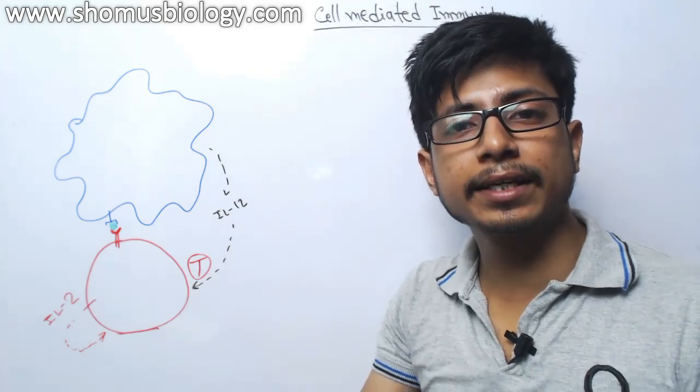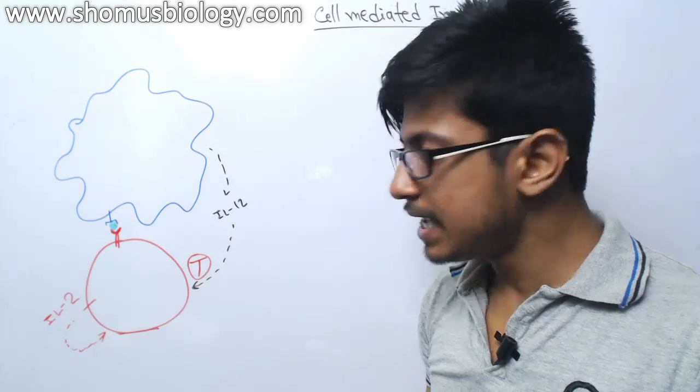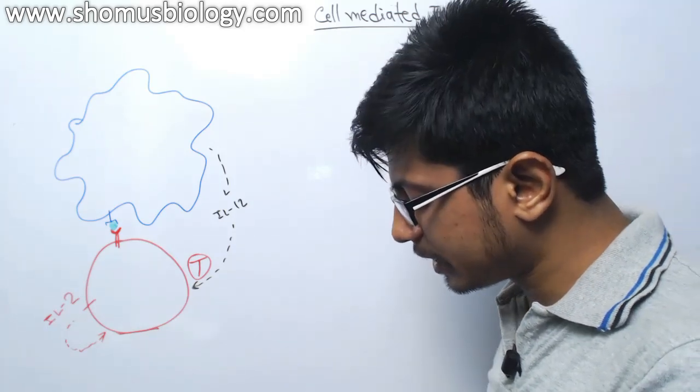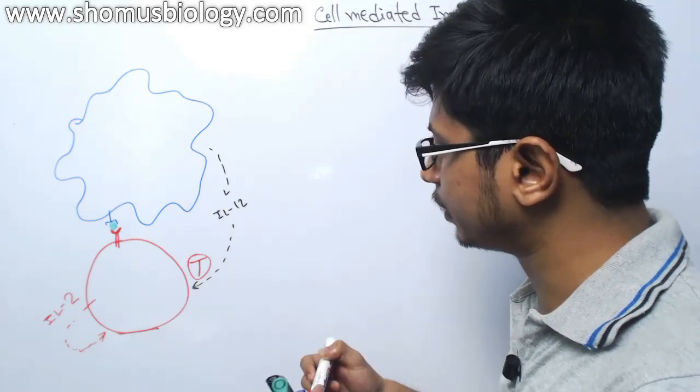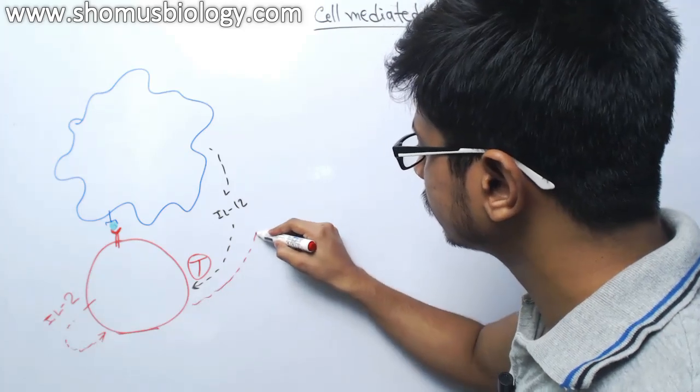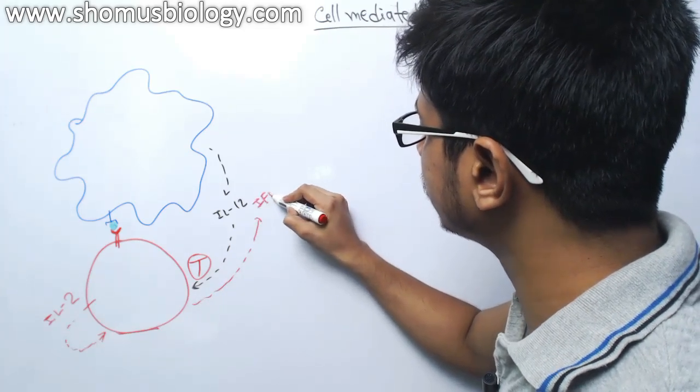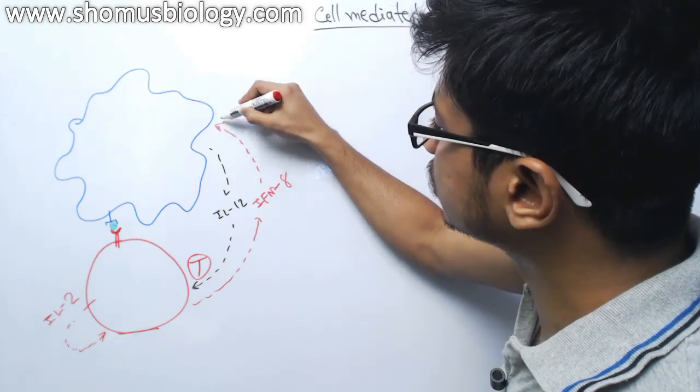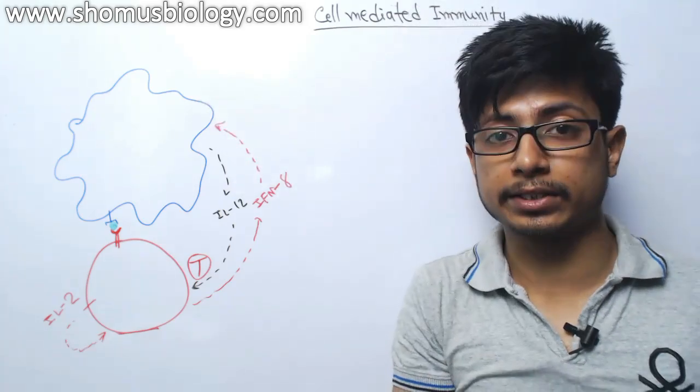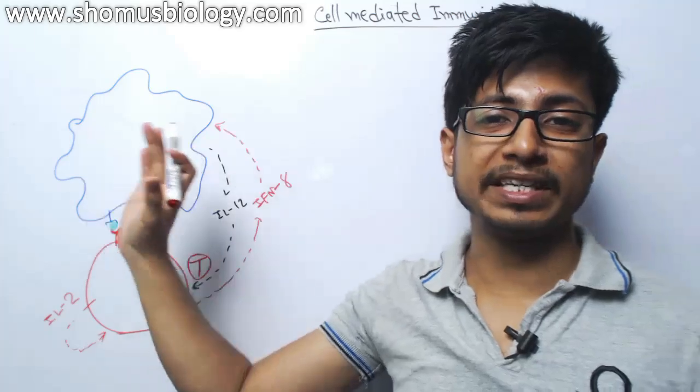So it is an autocrine signaling that we can see, and it also starts secreting another chemical molecule that is interferon gamma, which acts on macrophage or dendritic cell or any other antigen presenting cell.